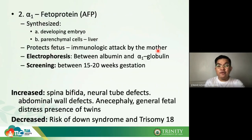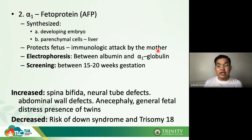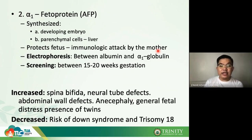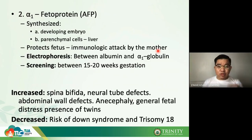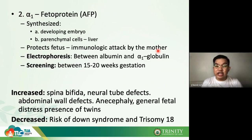Another alpha-1 globulin is alpha-fetoprotein, or AFP, which you may have encountered in your urinalysis and body fluids discussion. AFP is synthesized in the developing embryo and can also be seen in the parenchymal cells of the liver in adults.